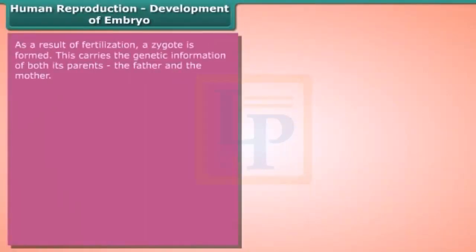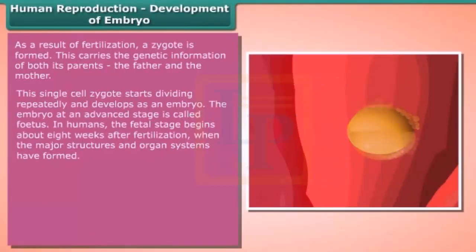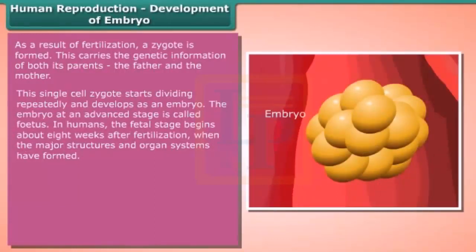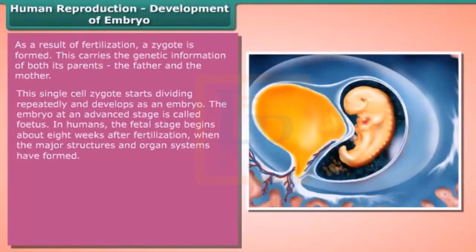As a result of fertilization, a zygote is formed. This carries the genetic information of both parents — the father and the mother. This single-cell zygote starts dividing repeatedly and develops as an embryo. The embryo at an advanced stage is called a fetus. In humans, the fetal stage begins about eight weeks after fertilization, when the major structures and organ systems have formed.